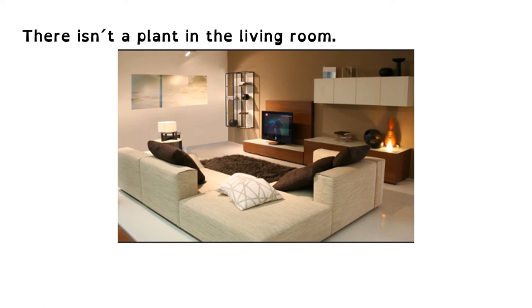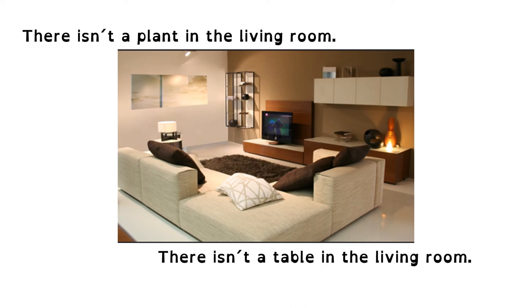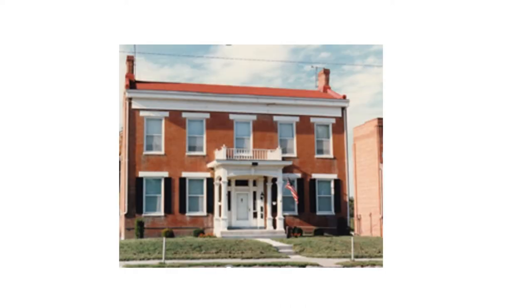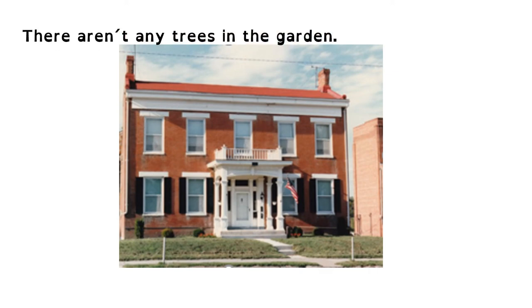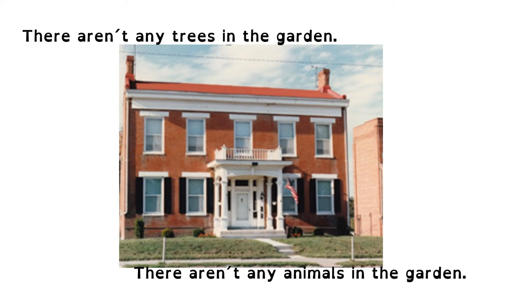And can you see a table? No, there isn't a table in the living room. Let's talk about this garden. Can you see any trees? Are there any trees? There aren't any trees in the garden. And what about animals? Are there any animals? No, there aren't. There aren't any animals in the garden.